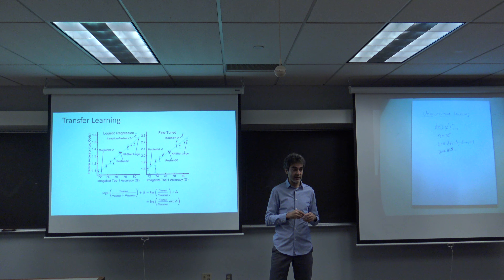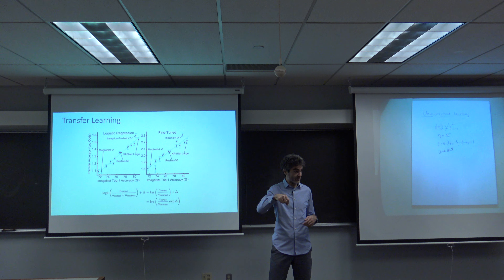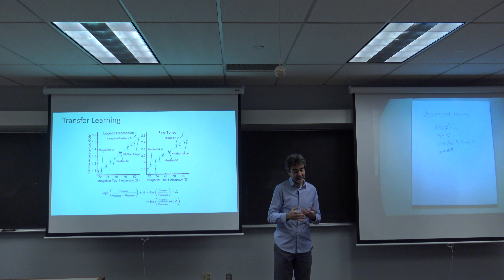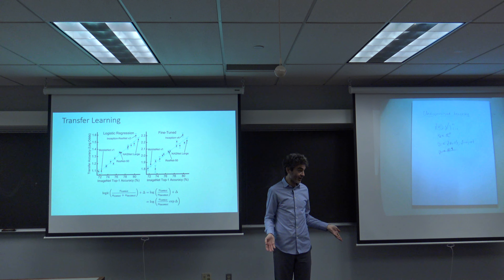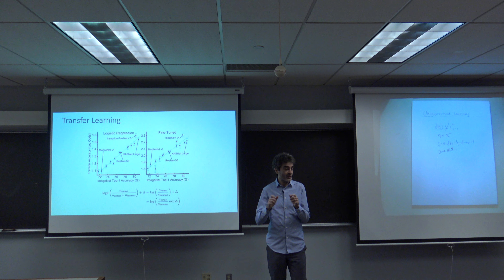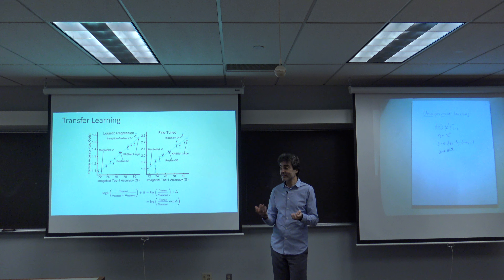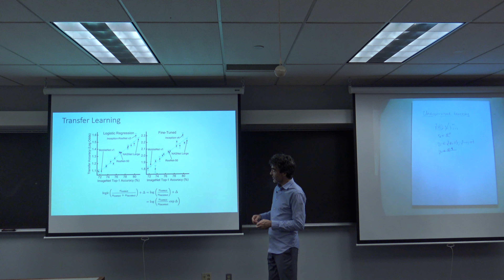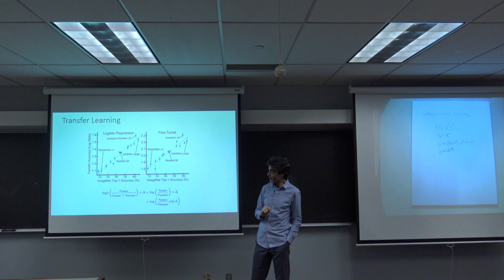Once you have a network trained on image classification, you want to use it for image segmentation — delineating objects in an image, assigning each pixel to an object. You can label a little data for segmentation with a small n, but you can't spend a lot of resources annotating millions of images. So can you use the pre-trained classification network and just fine-tune it on a very small segmentation dataset? It turns out it works sort of okay, as shown in recent results posted on arXiv.